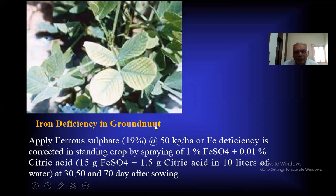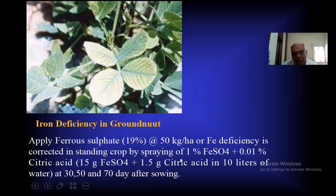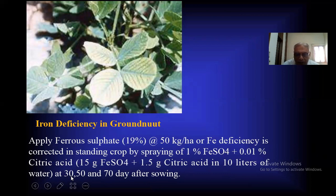For iron deficiency in groundnut, apply ferrous sulfate (19%) at the rate of 50 kg per hectare in soil. Iron deficiency in a standing crop can be corrected by foliar spraying of 1% ferrous sulfate plus 0.01% citric acid — that is, 15 g ferrous sulfate plus 1.5 g citric acid in 10 liters of water — sprayed at 30, 50, and 70 days after sowing of groundnut.